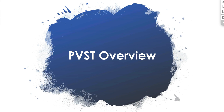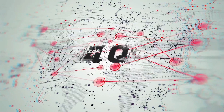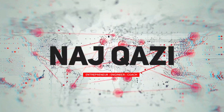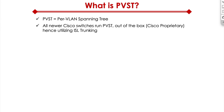Let's quickly shift our attention to PVST. It stands for Per VLAN Spanning Tree. All new Cisco switches run PVST out of the box. It's a Cisco proprietary protocol — that is something you have to keep in mind. Only Cisco switches run PVST by default.